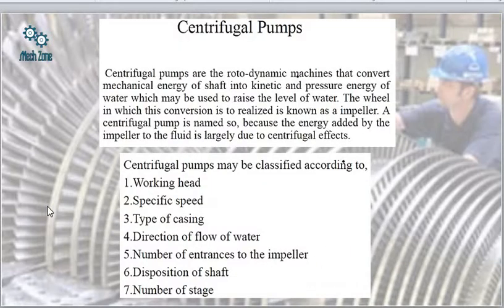Centrifugal pumps are a type of rotodynamic machine that converts the mechanical energy of the shaft into kinetic energy and pressure energy of water, which is used to raise fluid from one level to another. The wheel in which this conversion is realized is known as the impeller. A centrifugal pump is named so because the energy added by the impeller to the fluid is largely due to the centrifugal effect.